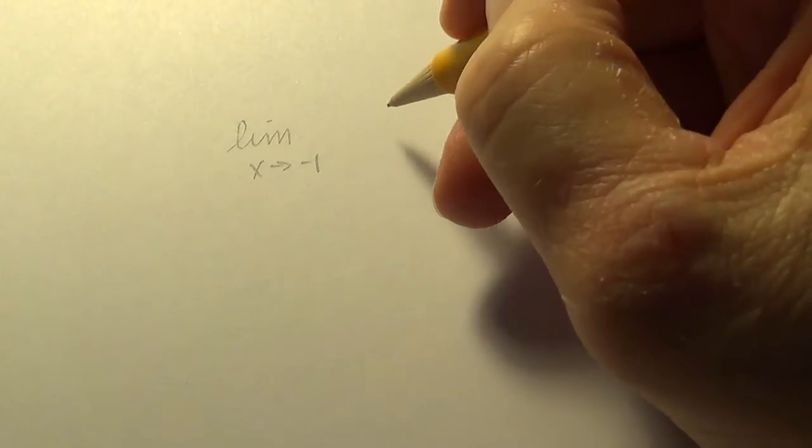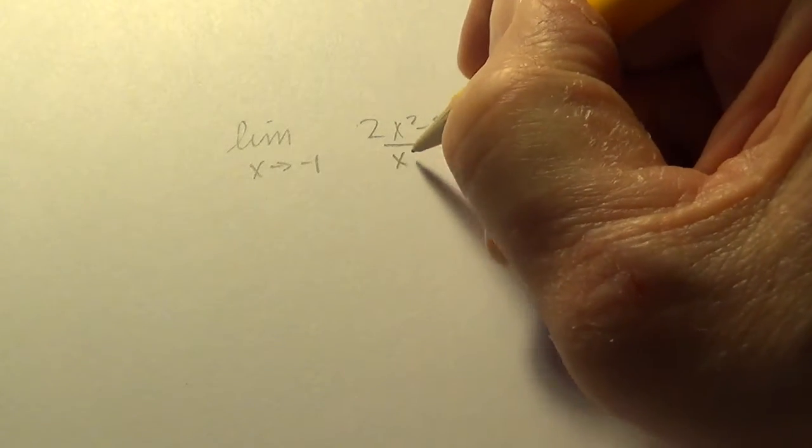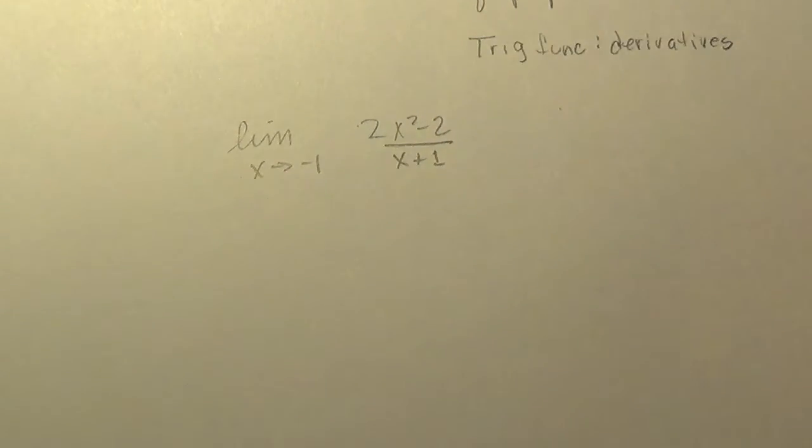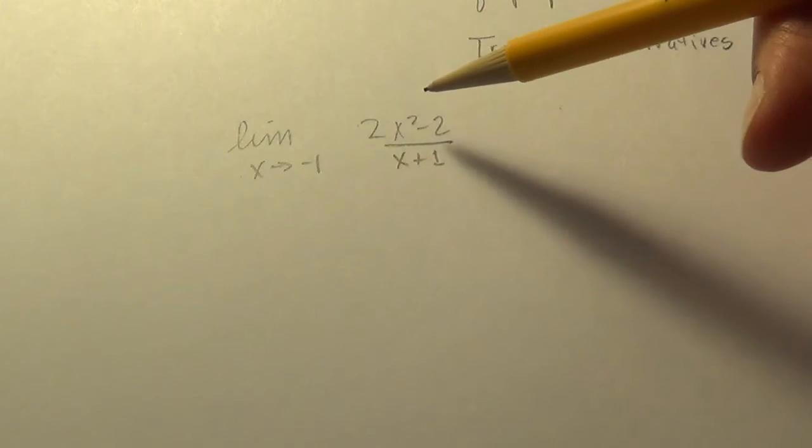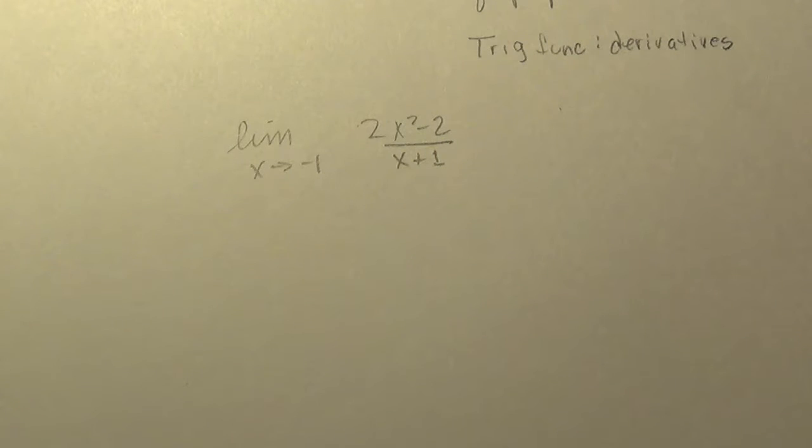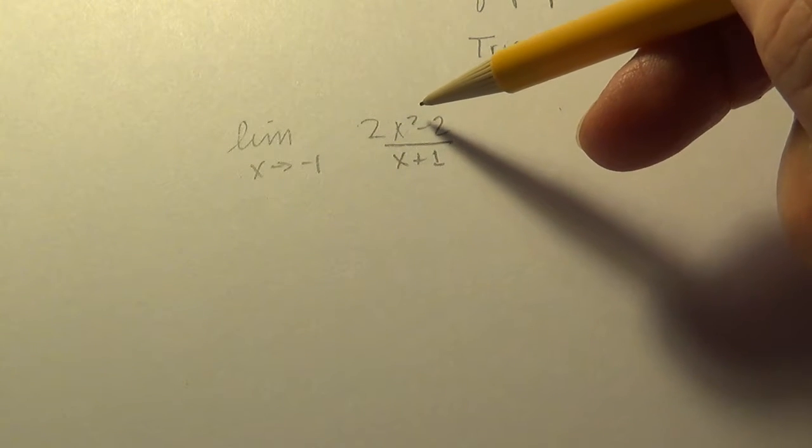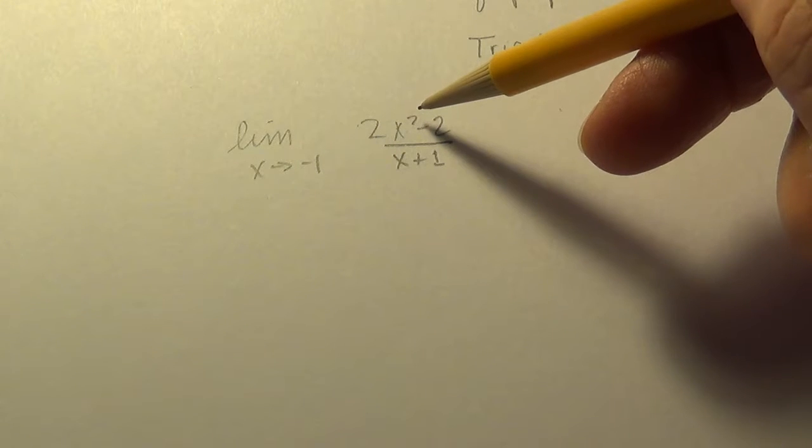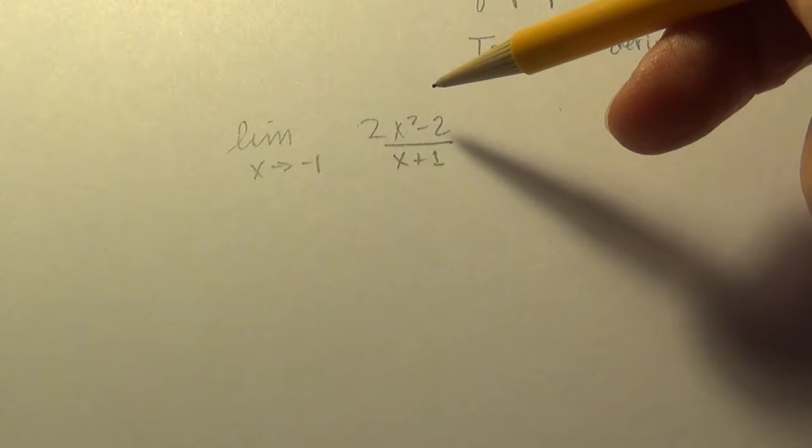Suppose we're looking at the limit as x goes to negative 1 of this expression: 2x squared minus 2 over x plus 1. All right, so when we took the limit, you recall the first thing is to always try to put that number in for x and see if it comes out to a number.